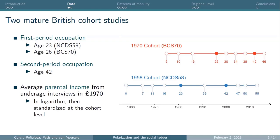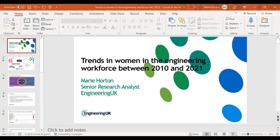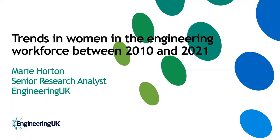Thank you very much Fabian — we're almost back on time. Moving on to the third of our three presentations: Marie Horton is a senior research analyst at Engineering UK, a non-profit organization working with the engineering community to increase knowledge and interest in engineering careers among young people. Recent reports have looked at opinions on engineering, educational pathways into engineering, and the workforce itself. Today she'll be presenting her review of the representation of female workers in the engineering workforce and the effects of recent efforts to attract more female workers into the profession.